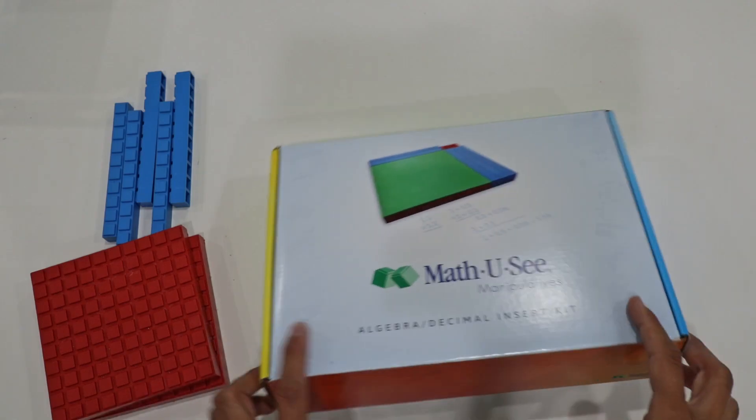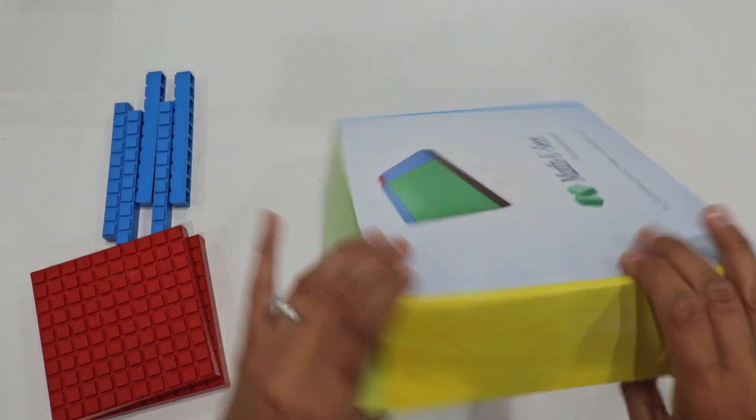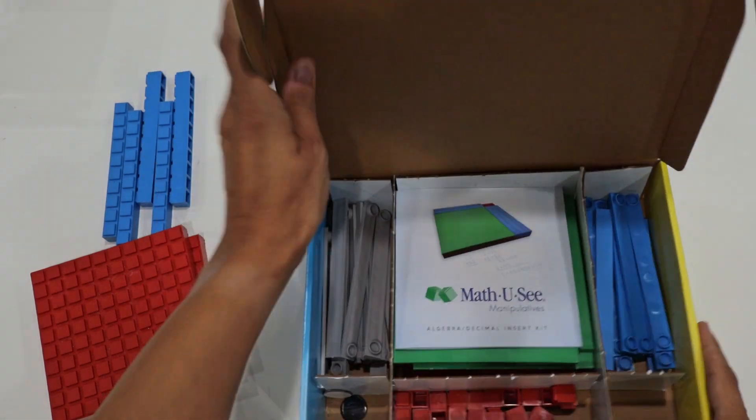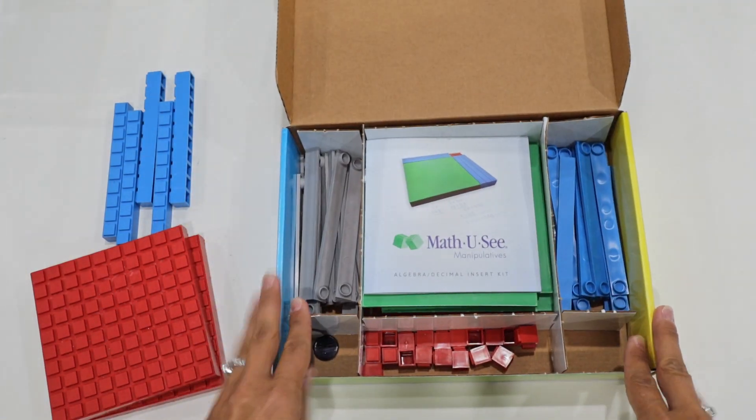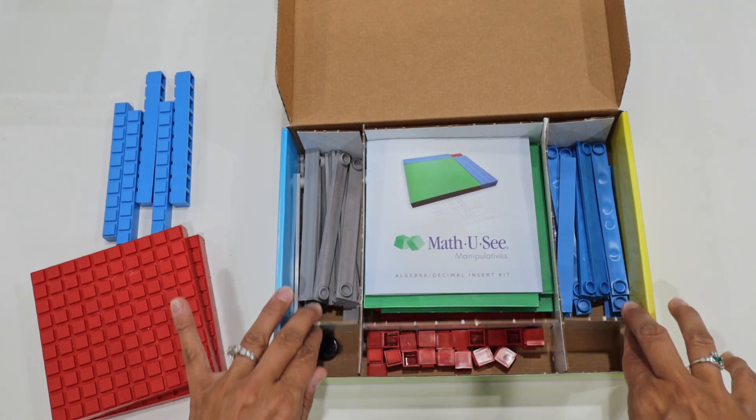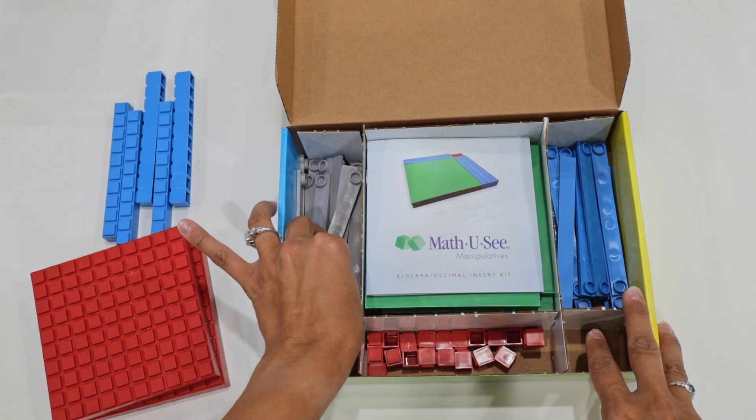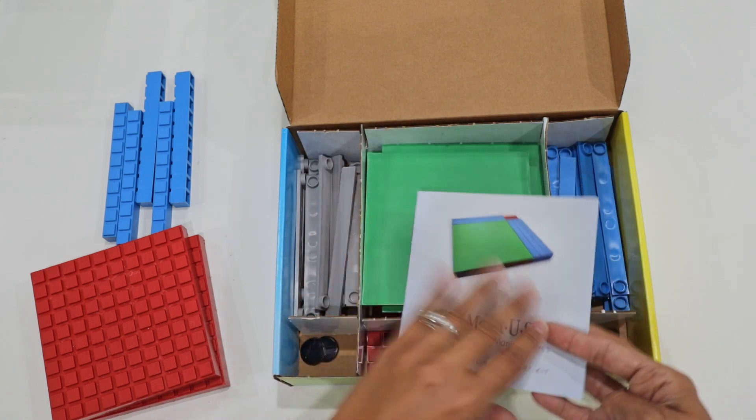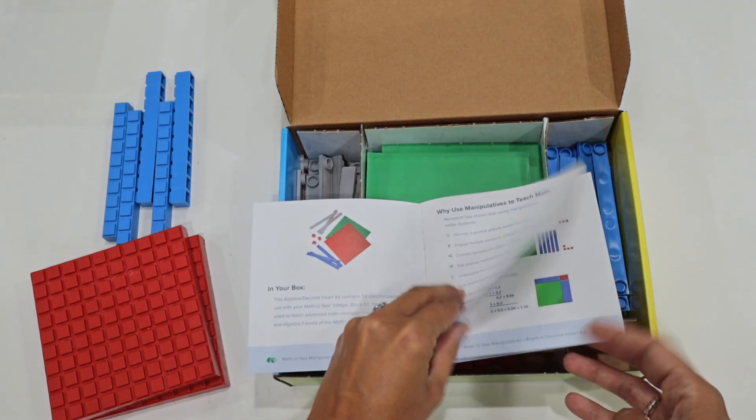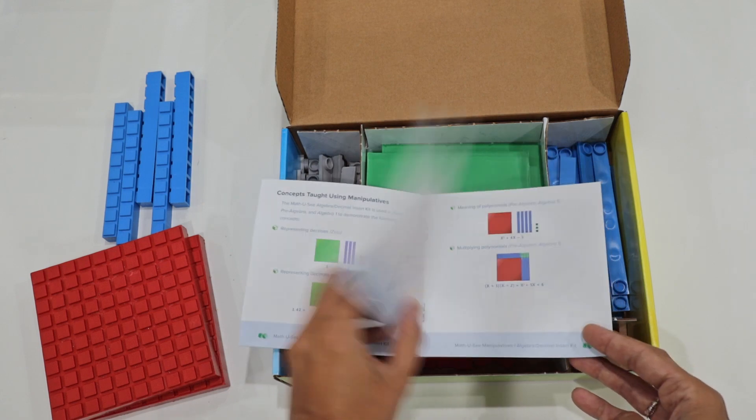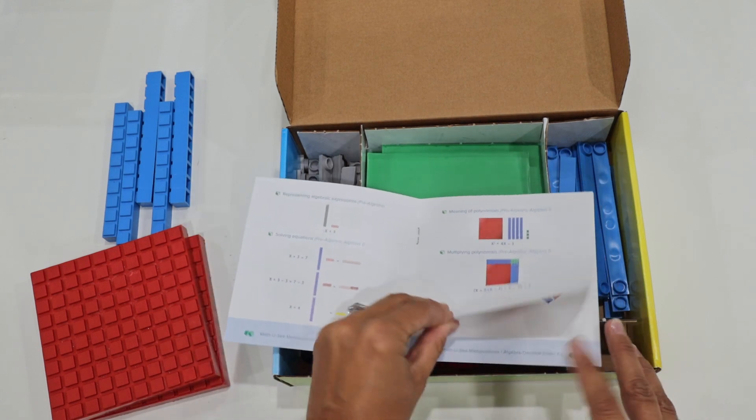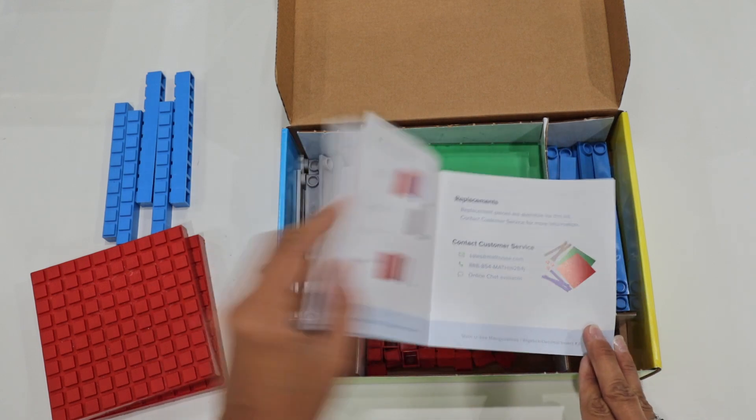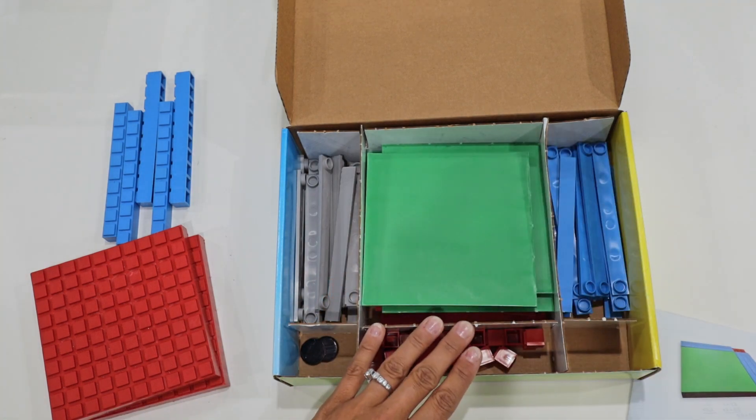The Algebra and Decimal Insert Kit comes in a nice cardboard box. It opens up and has some great dividers already in place, which is something great because you can store it right here if you didn't have another bin or box that you were using. In the center is a small booklet. It does have some examples in it. I would recommend reading through it. It was actually helpful—small but very helpful to go through just understanding what the different blocks and inserts are for.